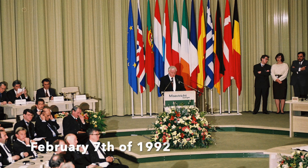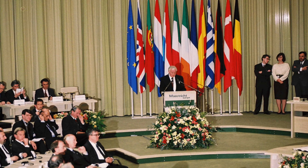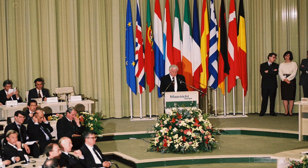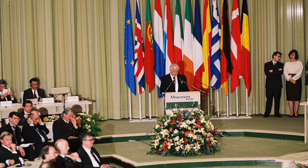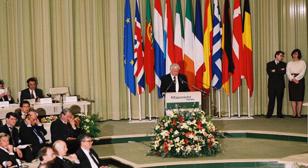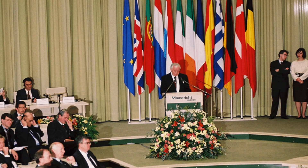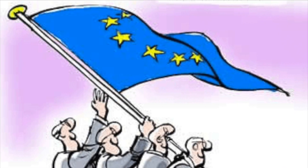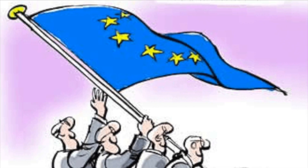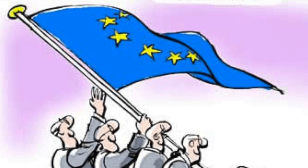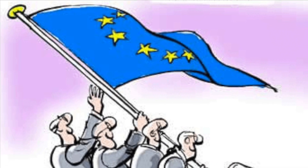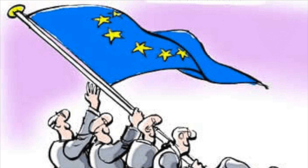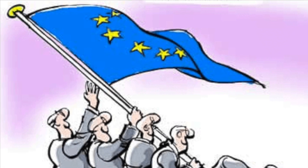On February 7th of 1992, the Maastricht Treaty was signed by members of the European Community. Officially known as the Treaty on the European Union, it marked the beginning of a new stage in the process of creating an even closer union among the people of Europe. The treaty paved the way for an economic and monetary union, with the aim of introducing a single currency and integrating Europe.